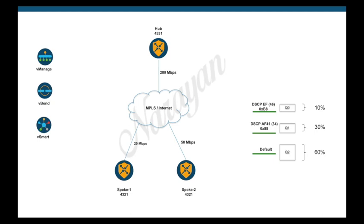Attached is the topology we will use for this demo. We have the same three-class QoS that we configured in the earlier video, where we match traffic with DSCP bit EF to the priority queue (Q0) and limit it to 10% of the bandwidth. Traffic with DSCP bit AF41 is mapped to Q1 and allocated 30% bandwidth, and all remaining traffic is mapped to Q2 with 60% of the bandwidth. The hub bandwidth is 200 Mbps, spoke one is 20 Mbps, and spoke two is 50 Mbps.